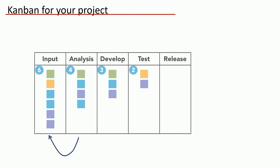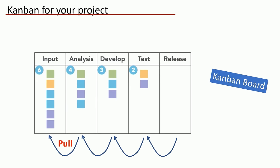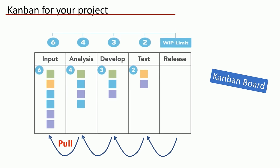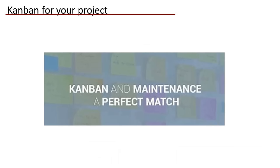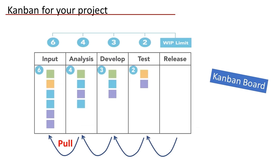The backlog can always be prioritized or reprioritized. On the Kanban board, in each area such as input, analysis, development, etc., you pull only the limited number of tickets from the previous bucket and work on them — only what you can handle based on team capacity. The numbers on top show your team capacity in each bucket. It's clearly a pull system. Kanban is a great fit for maintenance or service-type projects, since the team pulls the number of tickets they can handle and every group pulls from the previous bucket.